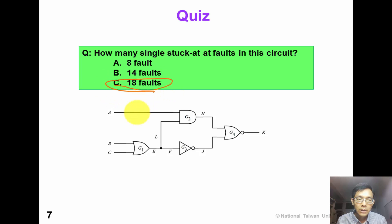Right. It's 18. We have 1, 2, 3, 4, 5, 6, 7, 8, 9. Nine circuit nodes multiplied by 2. So we have 18 faults in this circuit.